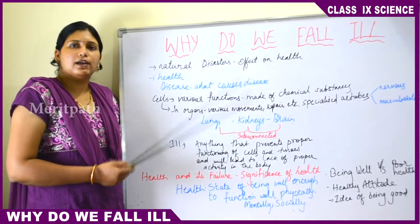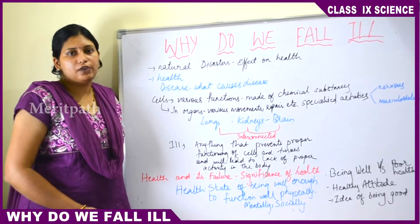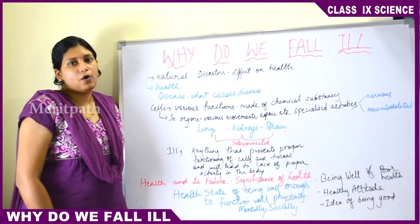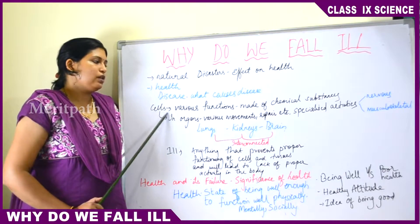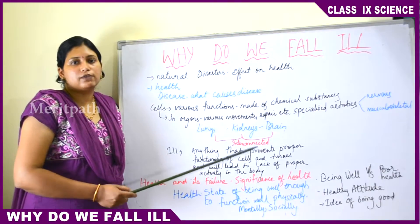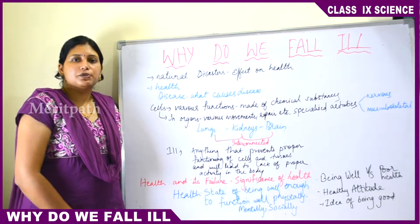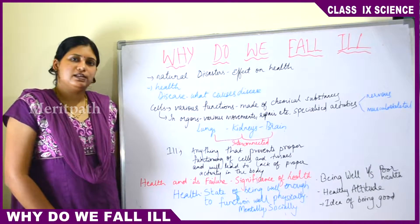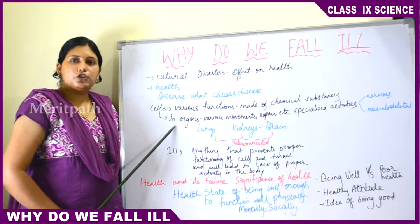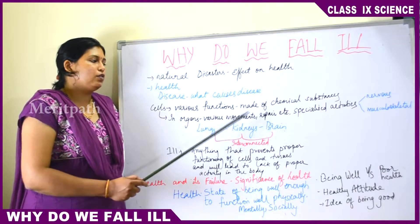When natural disasters occur they will cause diseases. Now, the body is made up of cells — the cell is the basic functional unit of life. Groups of cells form a tissue, and tissues make up the organs of the body. Cells carry out various functions and are made up of chemical substances such as carbohydrates, fats, lipids, etc. Tissues then form organs.